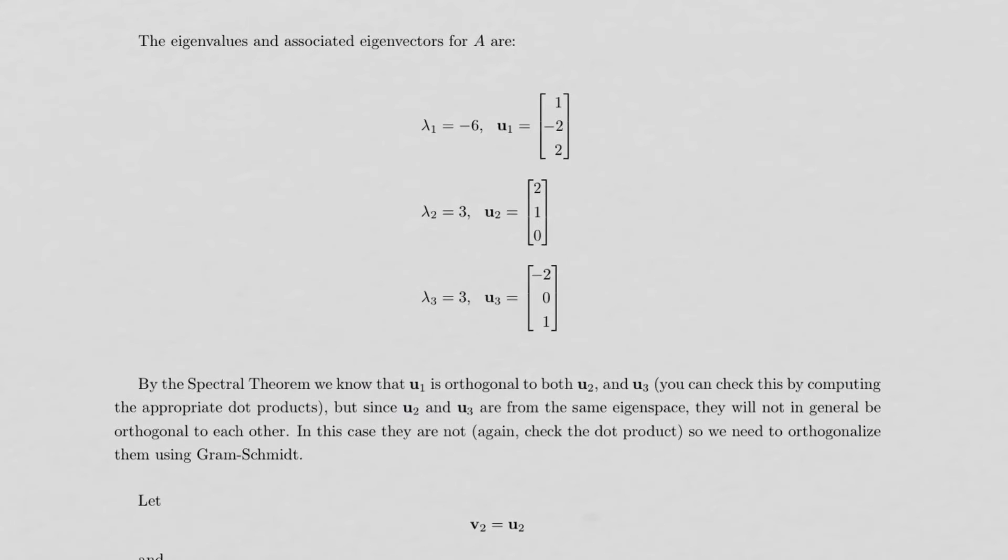So I skipped some steps here and just gave the results, finding the three eigenvalues and corresponding basis vectors. Now, notice that lambda 2 and lambda 3 are actually equal to each other.